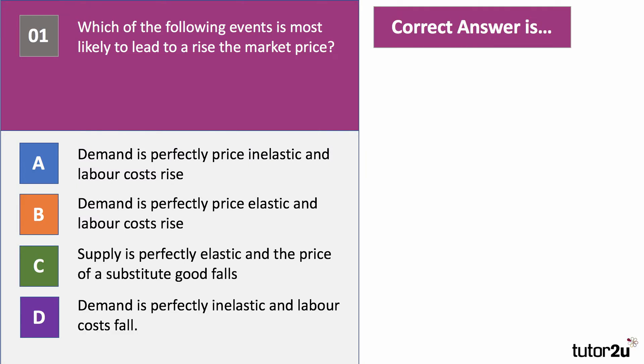Which of the following events is most likely to lead to a rise in the market price? Is it A, B, C or D? Press the pause button, have a look at the question, and then press play when you want to go through the answer together. The correct answer is A: when demand is perfectly inelastic and labour costs rise.